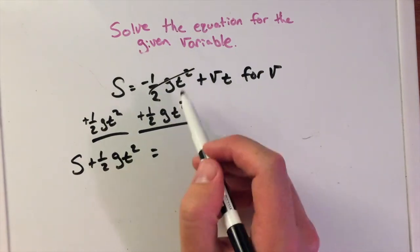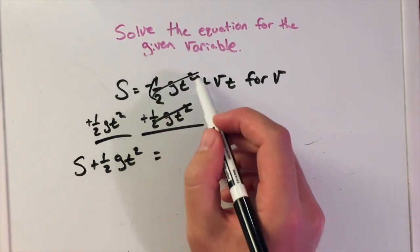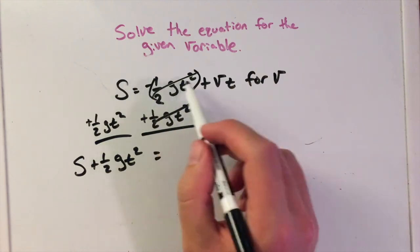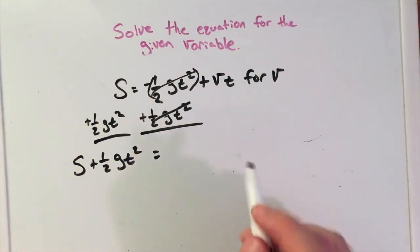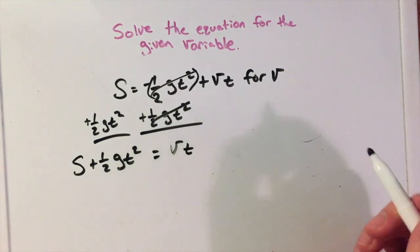Now this whole thing is canceled. If you want to think about it, there's like a parenthesis there. The whole thing is negative, and it cancels out. Now we're left with v times t.